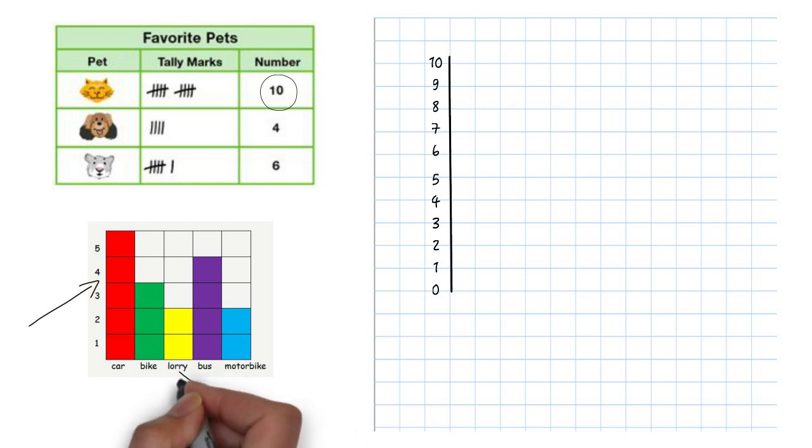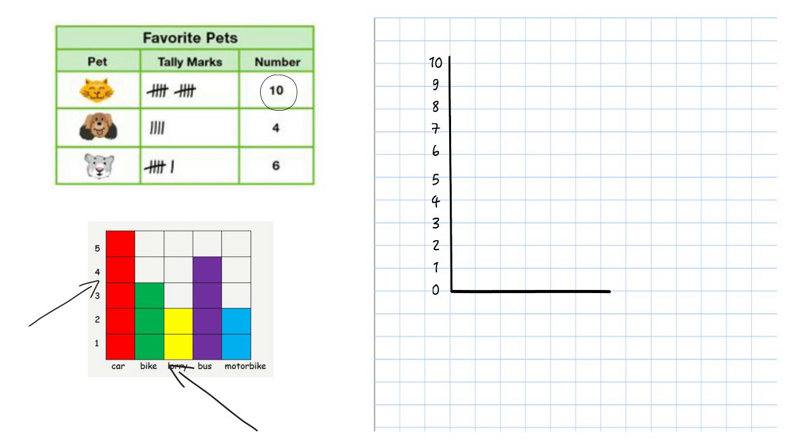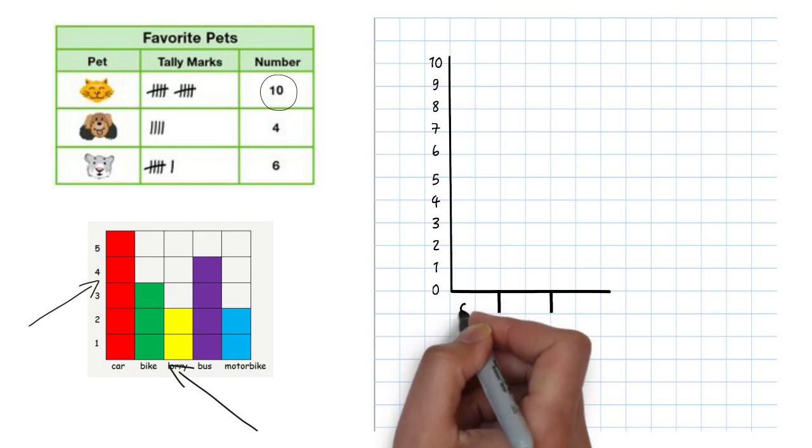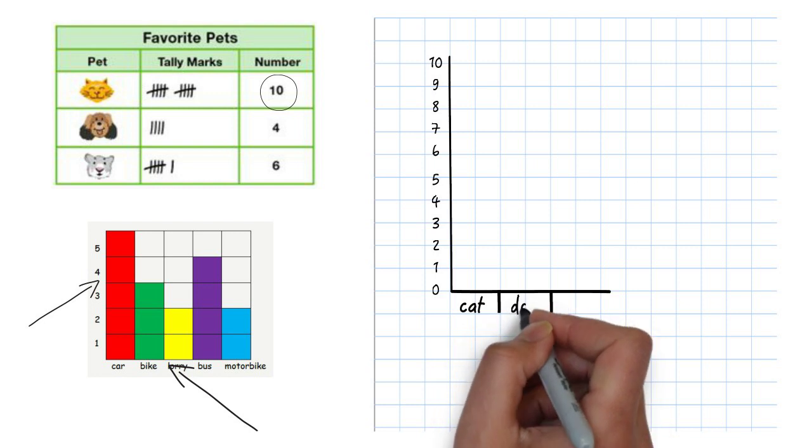Next I'm going to draw the categories, and in my table I've got three: cats, dogs, and hamsters.